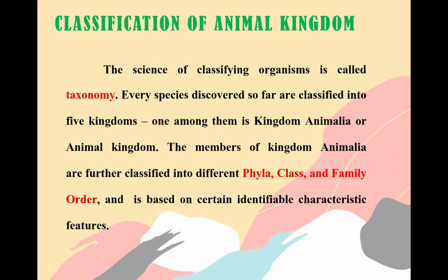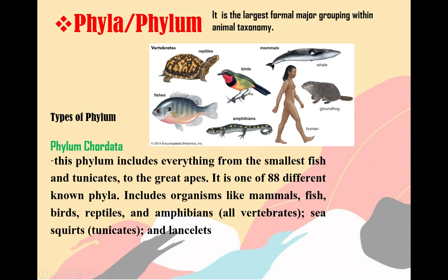The science of classifying organisms is called taxonomy. Every species discovered so far are classified into five kingdoms, but one of them is Kingdom Animalia or Animal Kingdom. The members of Kingdom Animalia are further classified into different phyla, class, and family order, based on certain identifiable characteristic features. The first classification of Animal Kingdom is phyla or phylum. It is the largest formal major grouping within animal taxonomy.